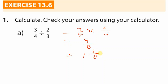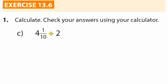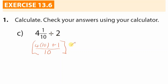For number c we have four and one-tenth divided by two. Remember, as soon as we see a mixed fraction it's best to change it to an improper fraction first. Our approach: take the whole number and multiply it by the denominator — so four times ten — then add the numerator. We always keep the denominator the same. We put all of this in brackets, then change the division sign to multiply.